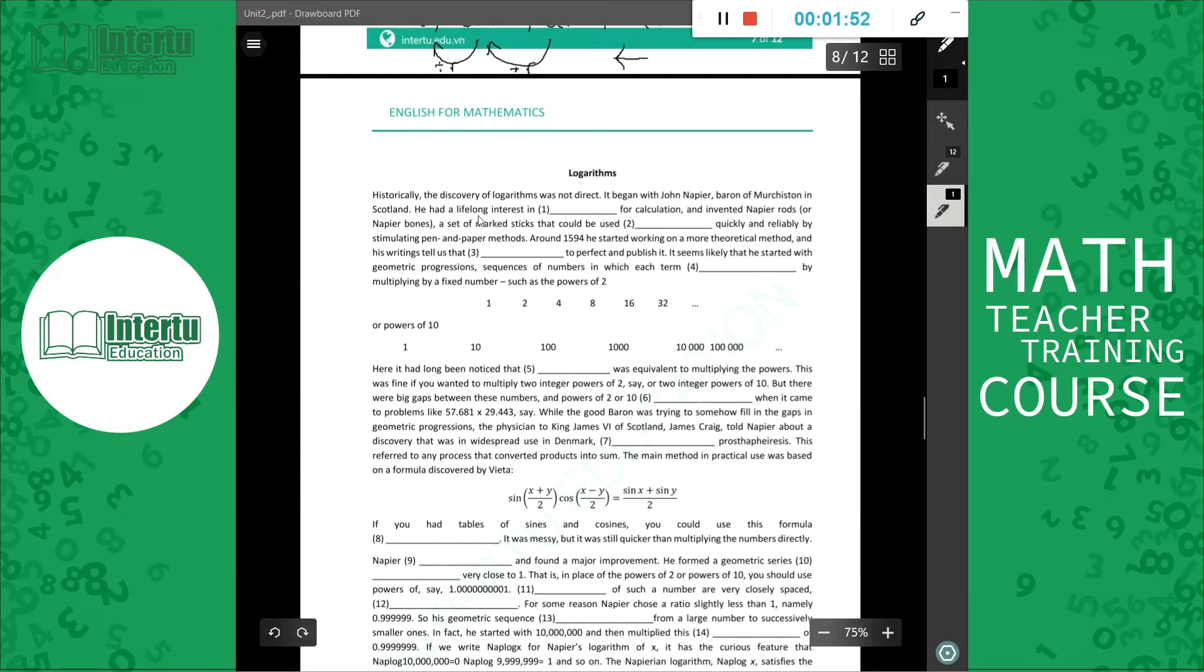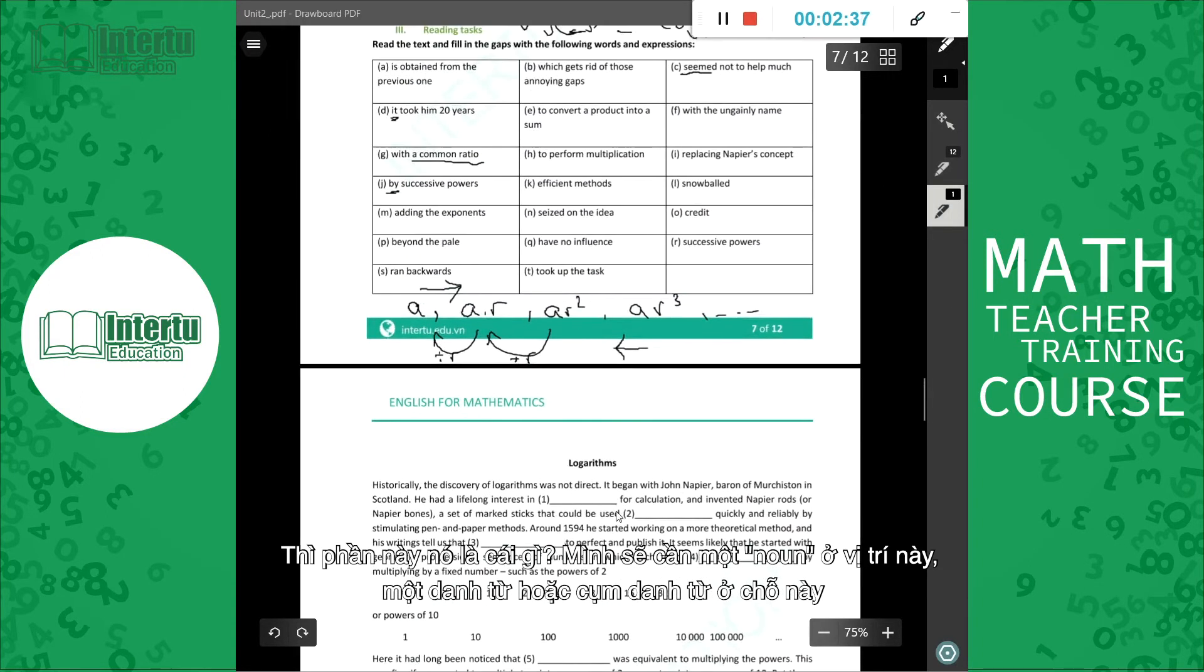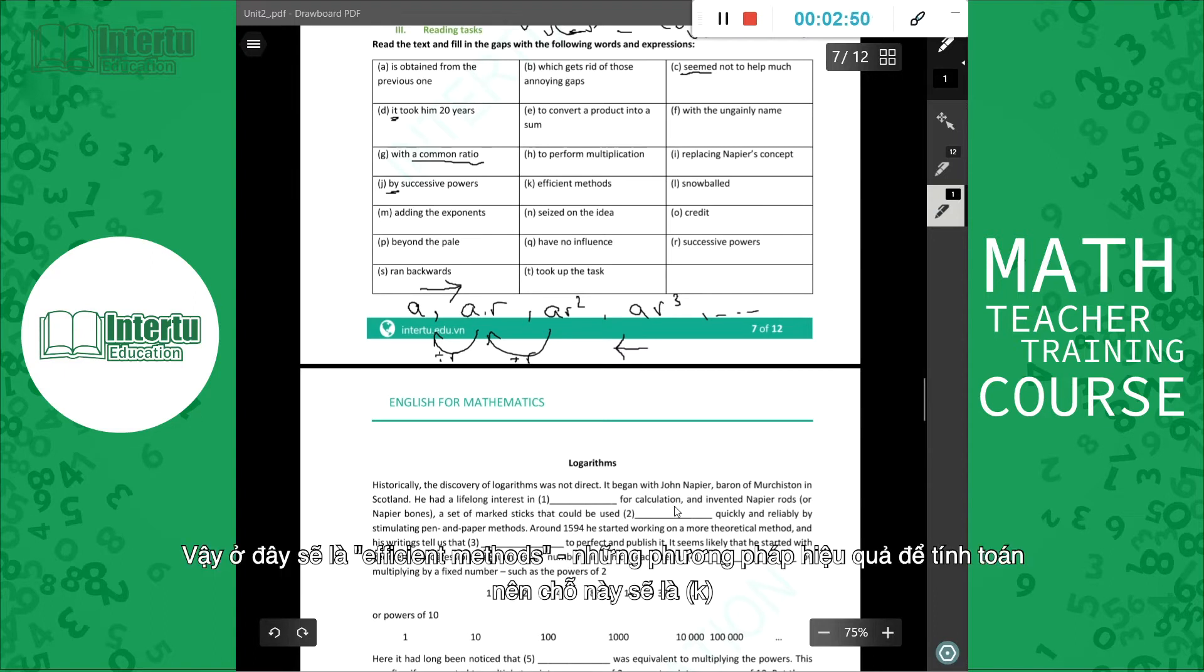Logarithms. Historically, the discovery of logarithms was not direct. It began with John Napier, Baron of Murchison in Scotland. He had a lifelong interest in... [Vietnamese: We need a noun here, right? A noun or noun phrase here for this calculation] He had a lifelong interest in something for calculation. So here it would be these efficient methods, right? Those efficient methods for calculation.